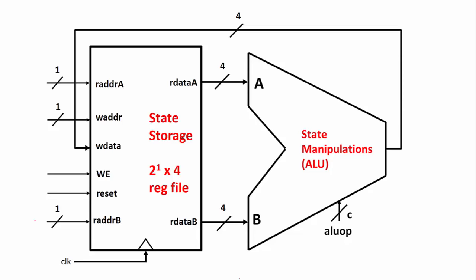As we've talked about before, a computer can do two things: store state and manipulate state. In this lecture we'll focus on state storage and specifically how to track how state changes over time when looking at a register file.